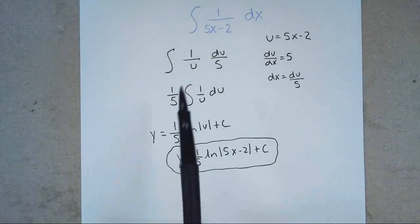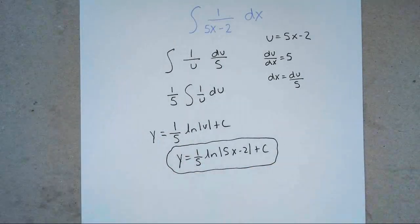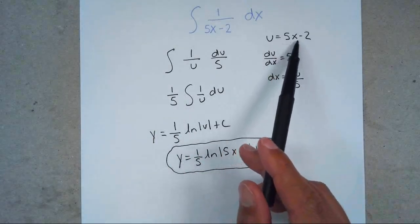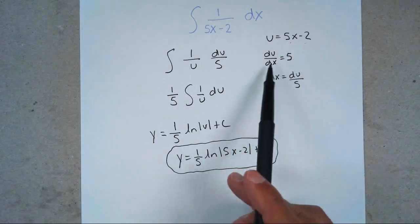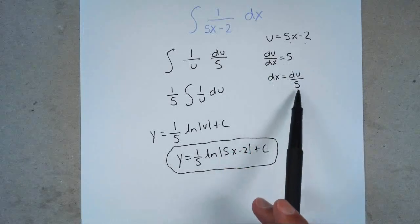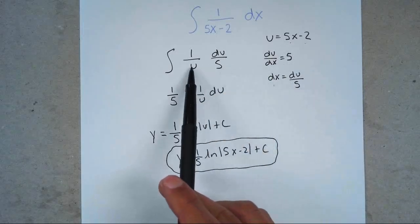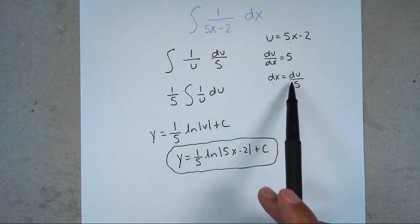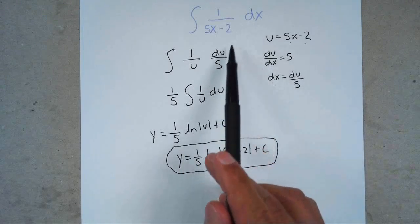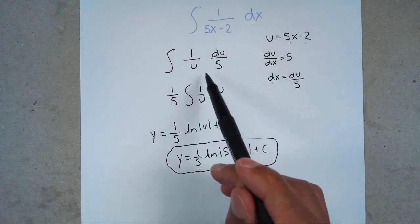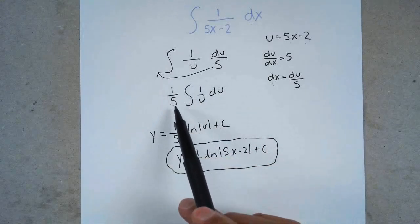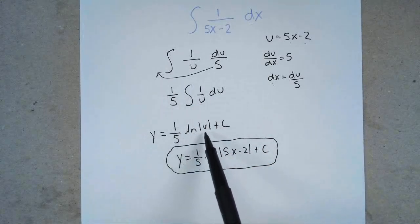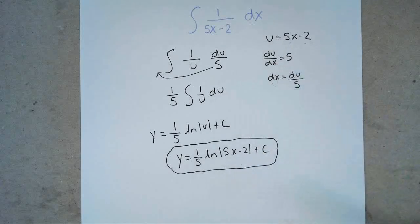So any time you notice that it's a fraction, set your u equal to the denominator. Find the derivative — du over dx equals 5 in this case. Swap these two so dx equals du over 5. Substitute u in the denominator, plug in du over 5, bring the 5 to the outside so you have (1/5) times the anti-derivative of 1 over u. Since 1 over u integrates to ln u, then re-substitute u back in.